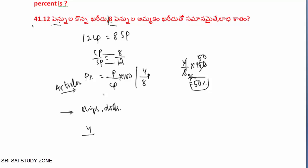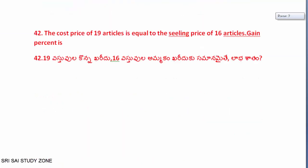If we consider profit percentage or loss percentage, it is not based on cost rate but it changes based on selling price. We have to consider 4 by 8 into 200, and consider the difference between the cost price and selling price.